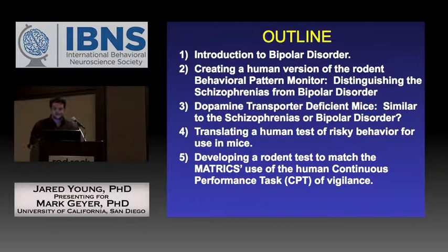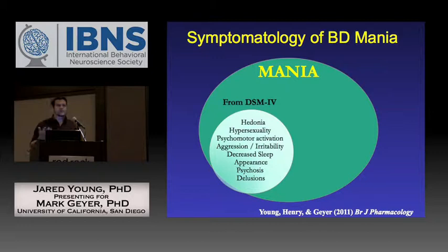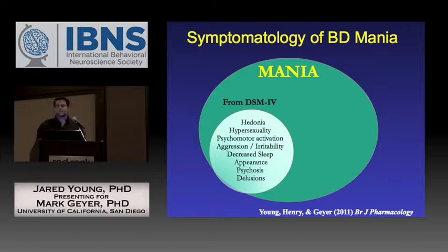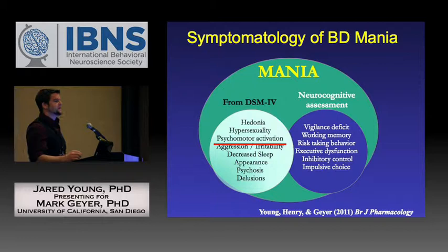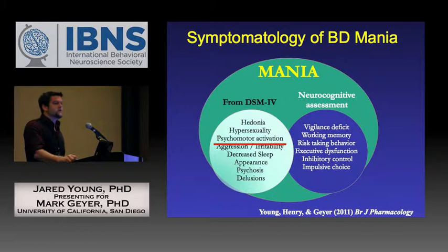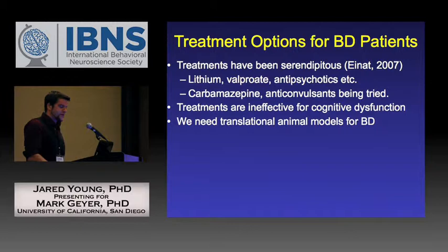The translational theme is strong throughout this work. In 2011, we published key symptomatology of bipolar disorder from DSM-IV, but symptoms like decreased sleep, psychosis, or delusions are not easy to model in animals. What didn't appear in DSM-IV are neurocognitive deficits such as vigilance deficit and risk-taking behaviour, as well as inhibitory control deficits — these are more amenable to cross-species translation.